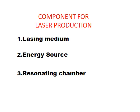The energy source uses a flash gun to excite the electrons of the lasing medium. The source of the flash gun is usually current electricity. The resonating chamber contains the lasing medium, surrounded by two parallel mirrors at either end. One mirror has 100% reflectance, while the other has slightly less reflectance. The mirror with slightly less reflectance serves as the output device, allowing some photons to escape through it.